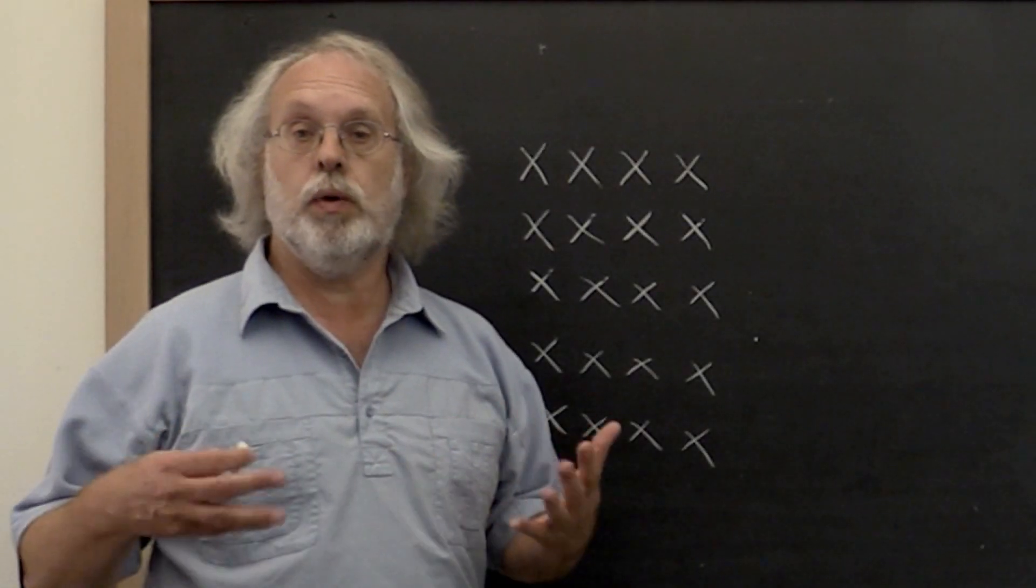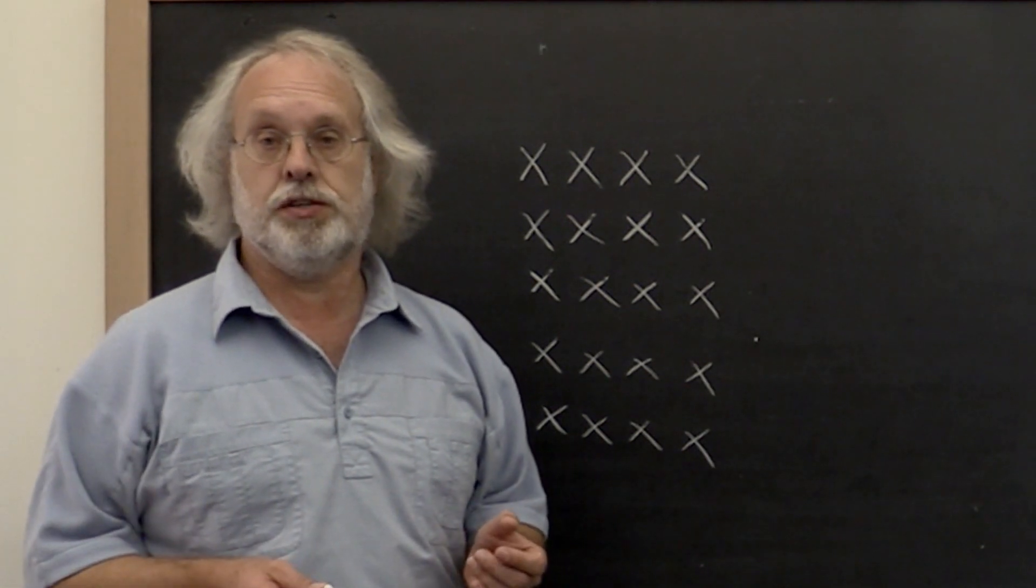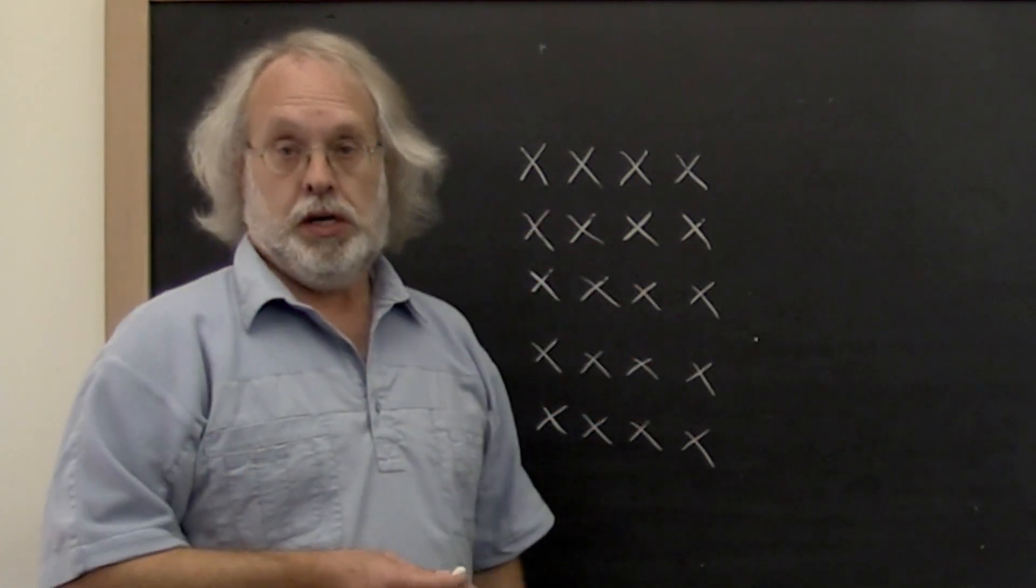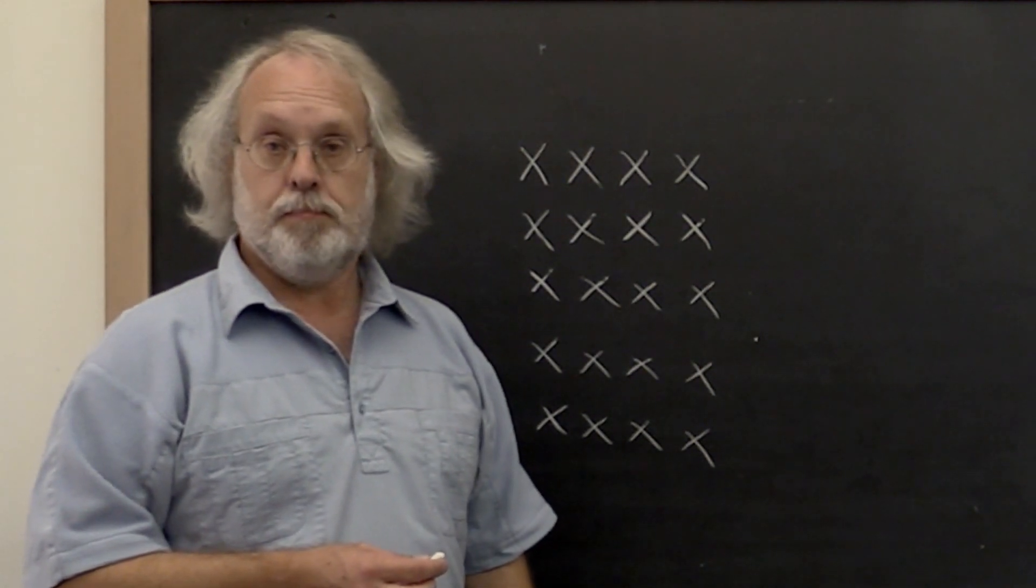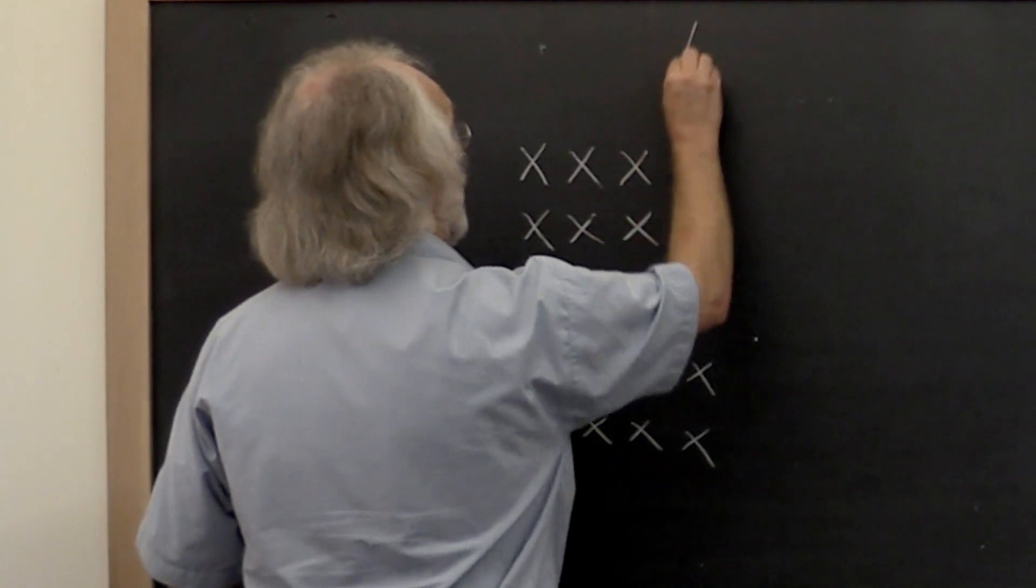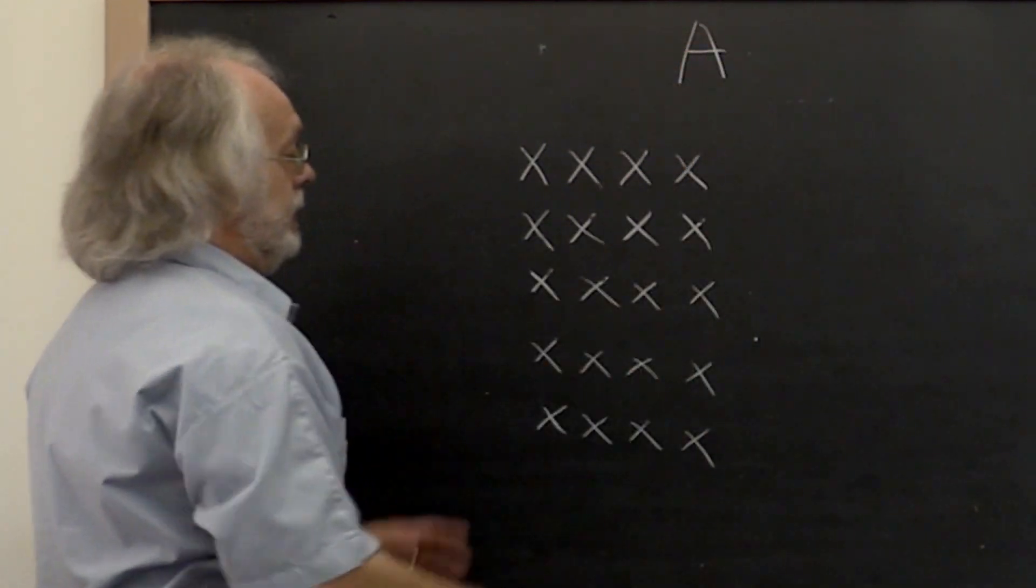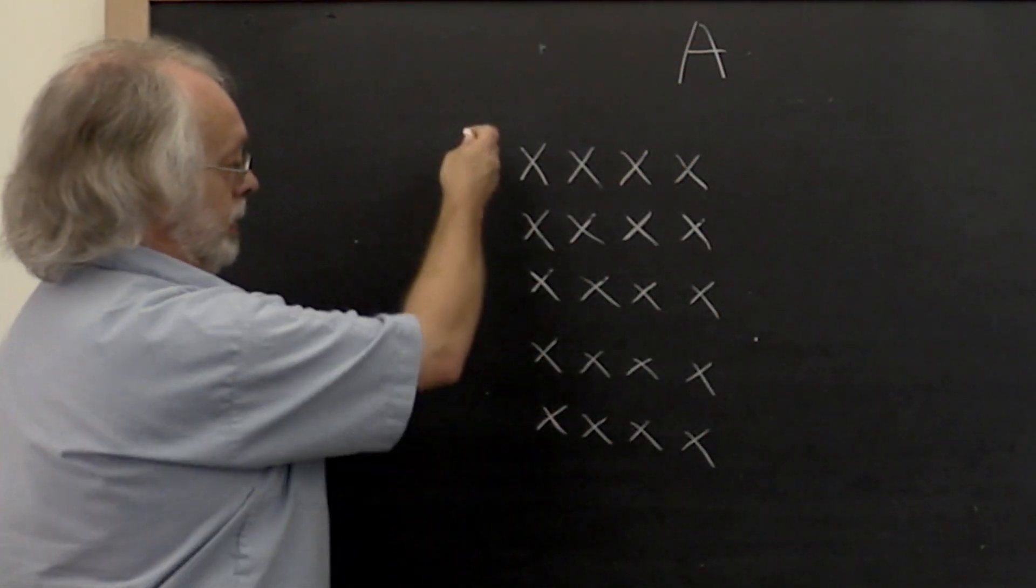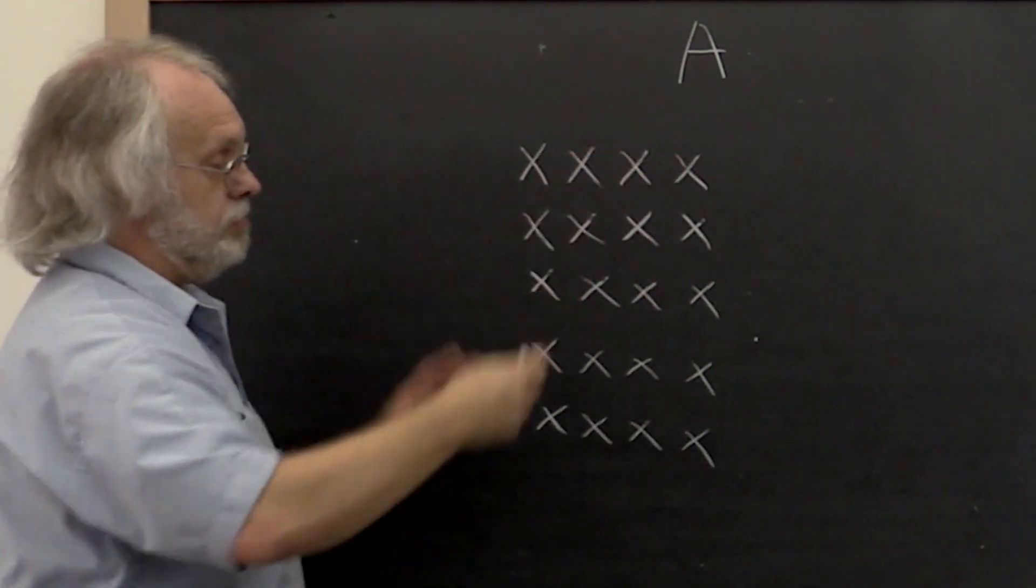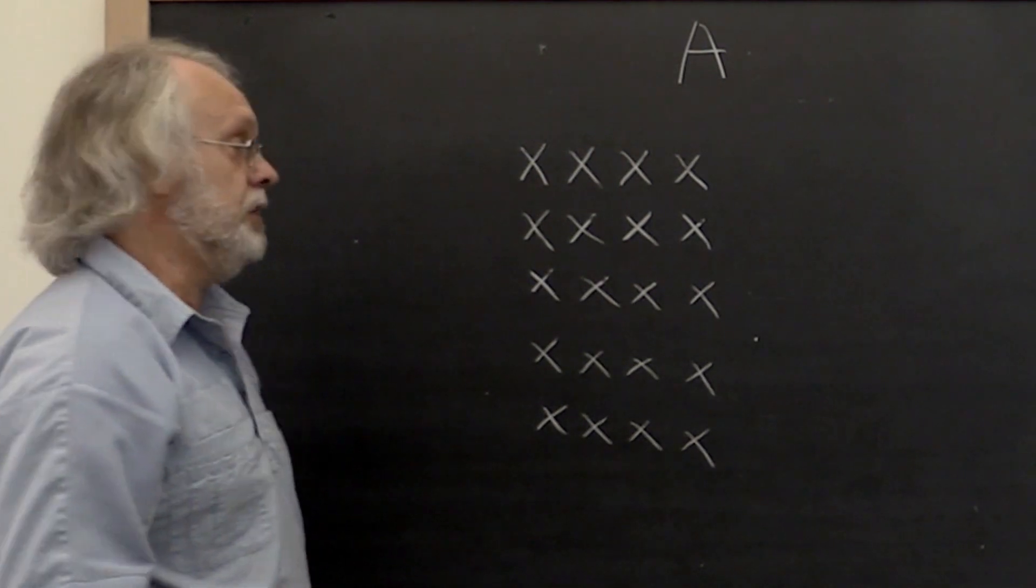So let's now discuss how we can use Householder transformations to transform a matrix A into an upper triangular matrix R. We start with the matrix A. And here I depict a 5 by 4 matrix where each of these X's is some arbitrary value in the matrix.